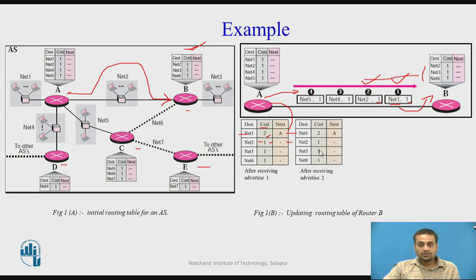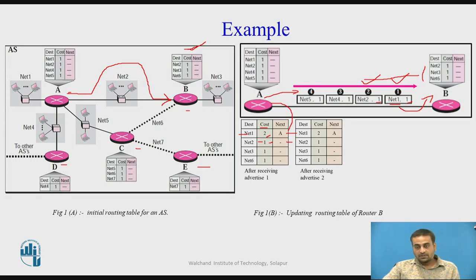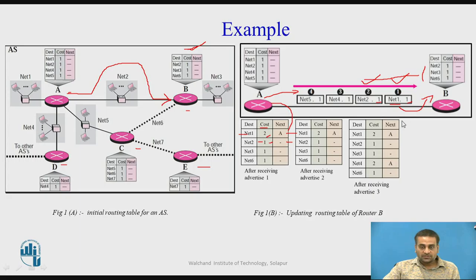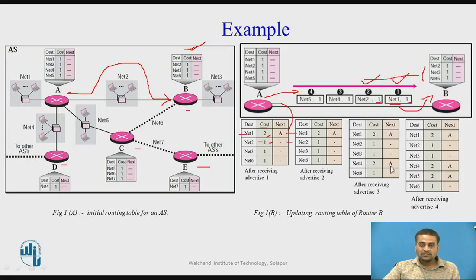The second updated table shows that net2 is already present. When router B receives the third routing update, it checks whether net4 is present; since it is not, it adds that entry by increasing the distance by 1 and sets the next hop to A. Similarly, after the fourth update, it adds net5 with a cost of 2 and next hop as router A.